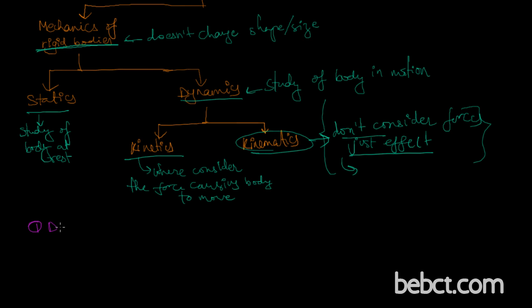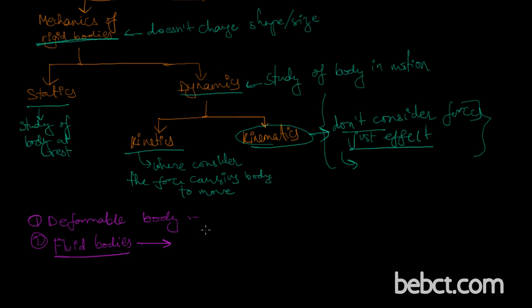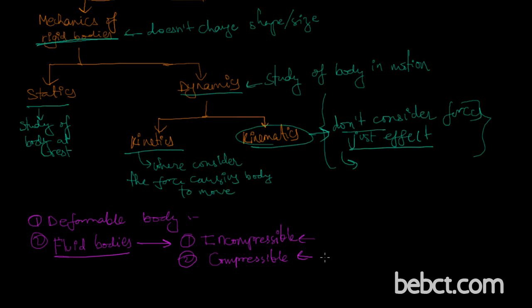The first one is the deformable body. A body which undergoes changes of shape and size is simply a deformable body. A stone, brick, any kind of bodies which change shape and size are deformable bodies. Fluid bodies are those bodies which flow — simply the liquid bodies. There are two kinds of fluids: incompressible, which does not go under compression and practically does not exist, and compressible, which can be compressed under the action of force and exists everywhere.